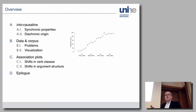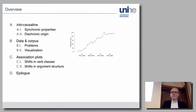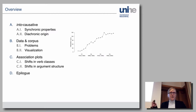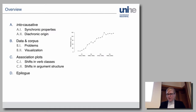What's the plan for the next three quarters of an hour to an hour? I'll introduce the intercausative — what it is, its synchronic properties — then look at the diachronic origin, because we can almost point to a moment in time where this construction emerged from related constructions. Then I'll talk about the data for recent development, the association plots as a complex but intuitive visualization method, shifts in verb classes, how verbs behave in terms of argument structure profiles, and finally link that back to construction grammar.